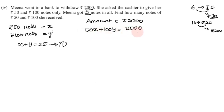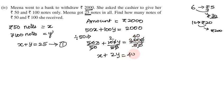We divide by 50. 50x divided by 50 plus 100y divided by 50 equals 2000 divided by 50. So x plus 2y equals 40. This is equation 2.